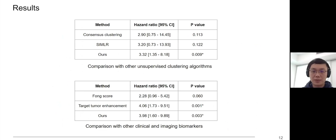We compared our results with other unsupervised learning methods, including consensus clustering as a baseline and a state-of-the-art method called SIMLR. Our method is the only method that stays significant in the Cox regression model. We also compared our method with existing biomarkers — the FONG score and TDE — and we had better performance than FONG score and comparable performance to TDE. However, TDE is specifically designed for T1 MRI of liver metastases and is a supervised model, while our model is unsupervised, so our model is less overfitted and can potentially be used to stratify other diseases.